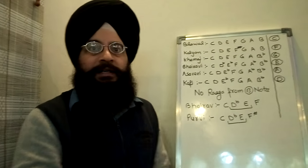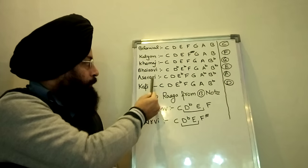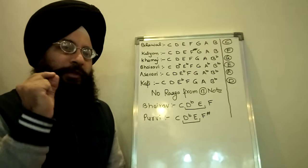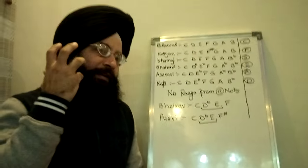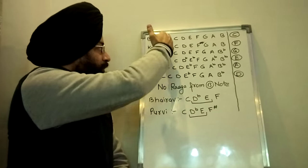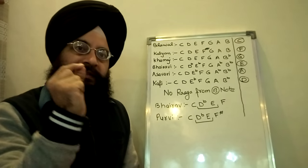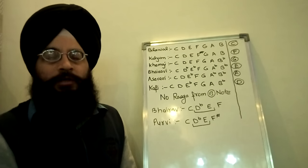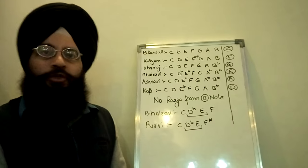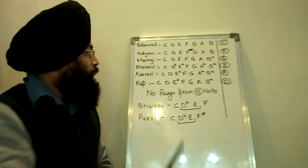Out of those 10 thats, there are 6 thats such that by selecting any particular note — if any song or raga falls within these 6 thats — then by just selecting the Sa of that particular song, you can choose a scale on a C harmonica so that there are no slider movements.